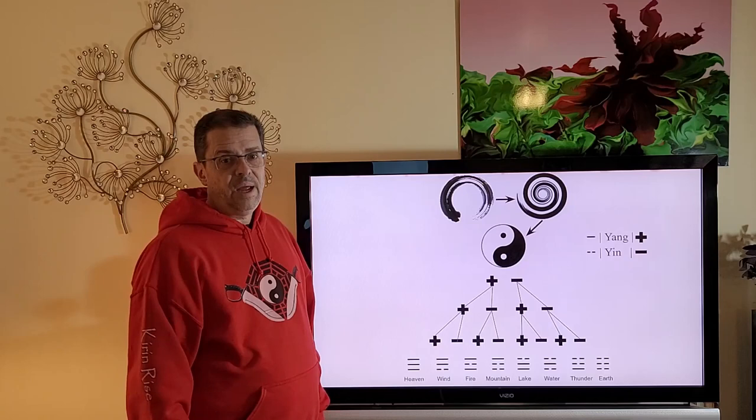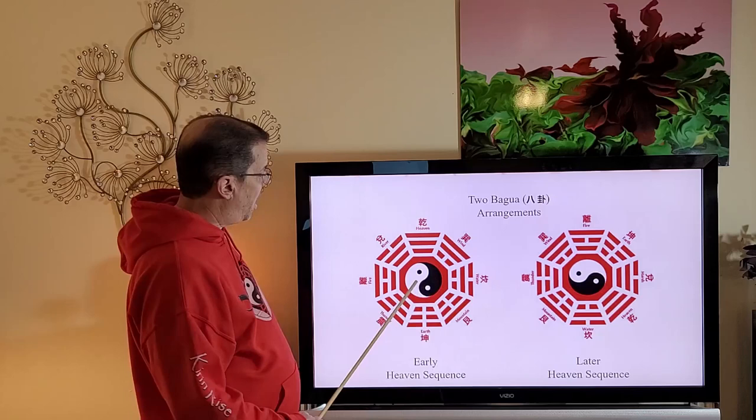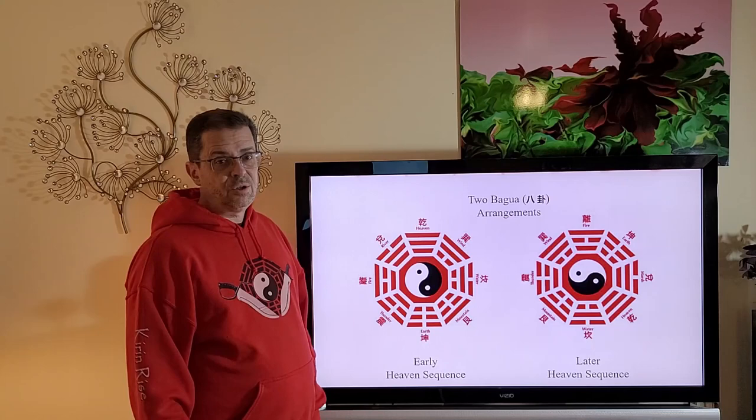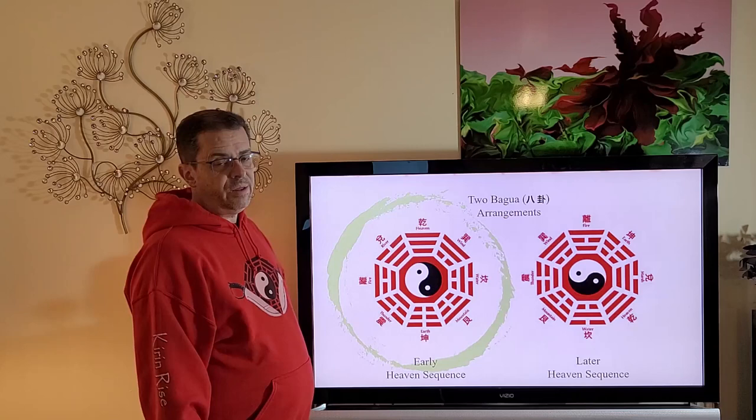So from heaven and earth, all the combinations were created, and we now have the eight trigrams that represent all things. But this isn't the order they're usually seen. We usually see these trigrams ordered in the bagua, which mean eight symbols. Something you might not know is that there are usually two different baguas that are seen. They are the early heaven sequence and the later heaven sequence. So I'll talk about the history and development of each.